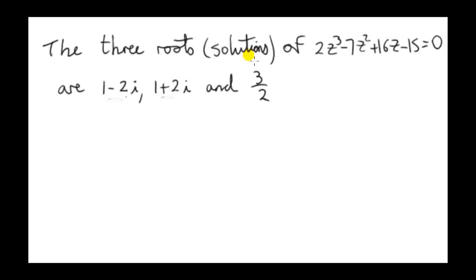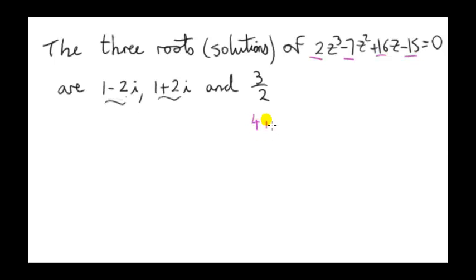So now we have all three roots — solutions of the cubic equation. If we have three roots and two of them are complex, the third one has to be a real root. That's because for a cubic equation with real coefficients, if there's a complex root, the conjugate must be another root. So if the third root were complex — say 4 plus 5i instead of 3 halves — we'd need 4 minus 5i as yet another root, giving four roots. But cubic equations can have at most three roots, so the third root must be real.